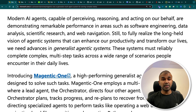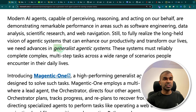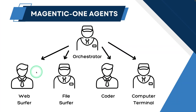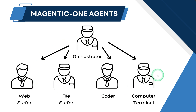So how does this differ from other agentic frameworks? This is a more generalistic agentic system, which means it's able to perform multiple tasks. It uses four different specialized agents and an orchestrator agent to coordinate the entire process.